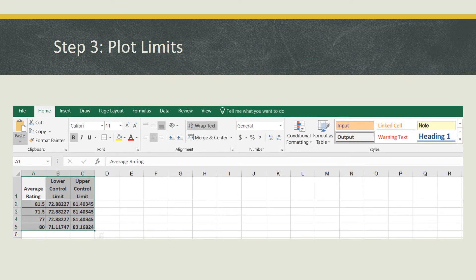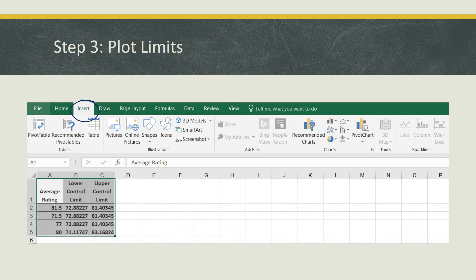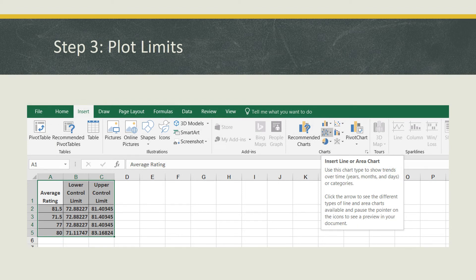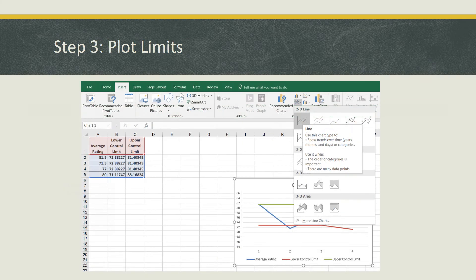And what you want to do is select all of the values, then select insert at the top. And your options may look slightly different depending on what year of Excel you're using, but you should go ahead and find the insert line or area chart option. And go ahead and select the first thing under the 2D line, which is a simple line chart. And once you do that, you should get something that looks like this.